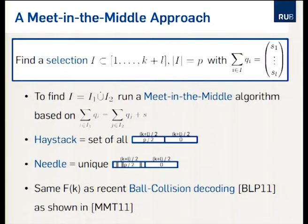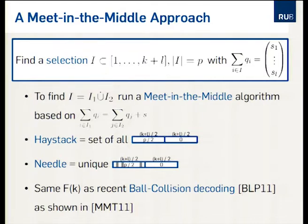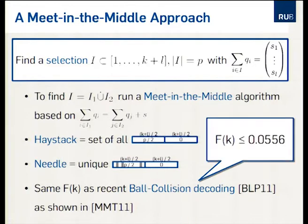In terms of the haystack analogy, the haystack is the set of all possible index sets I1 — vectors with exactly P/2 ones in the first (K+L)/2 coordinates — and since there is only one unique way of writing I in such a decomposition, there is only a unique needle. Optimizing and computing the complexity coefficient yields something like 0.0556, which is asymptotically equivalent to the ball-collision decoding method presented at Crypto by Bernstein, Lange, and Peters.